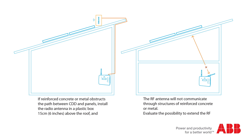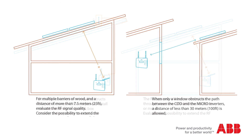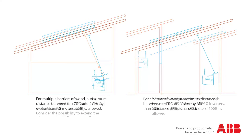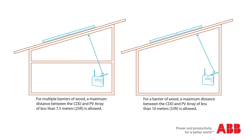With the microinverter installed on the roof, the distance between the inverter and the CDD should be in close range. If the distance is too great, the signal will not be strong enough for the monitoring functionality to work. Check the manual for specific location guidance.